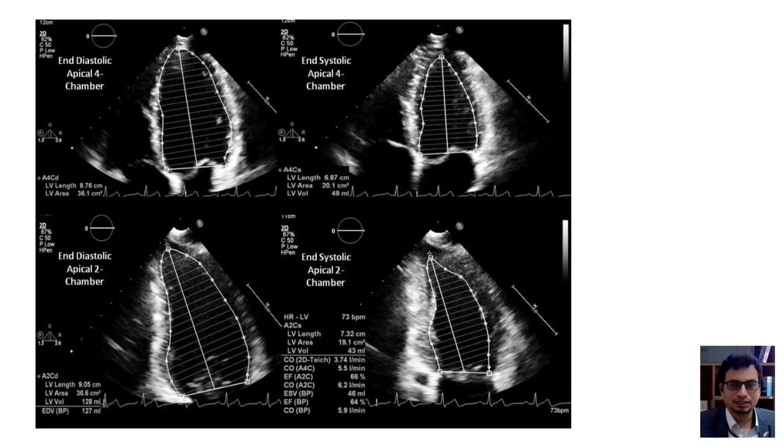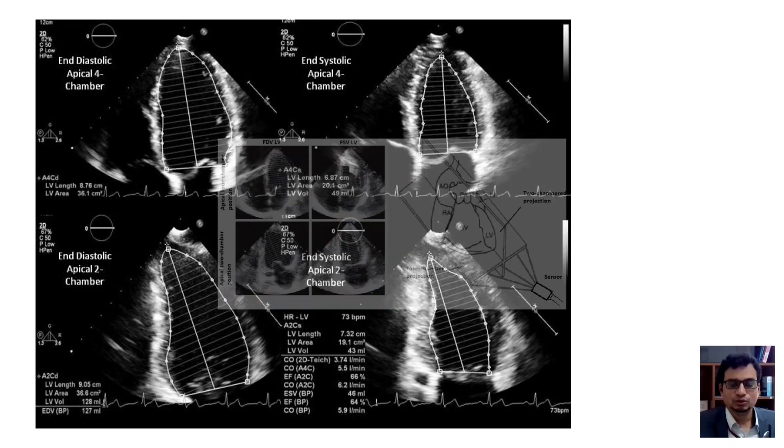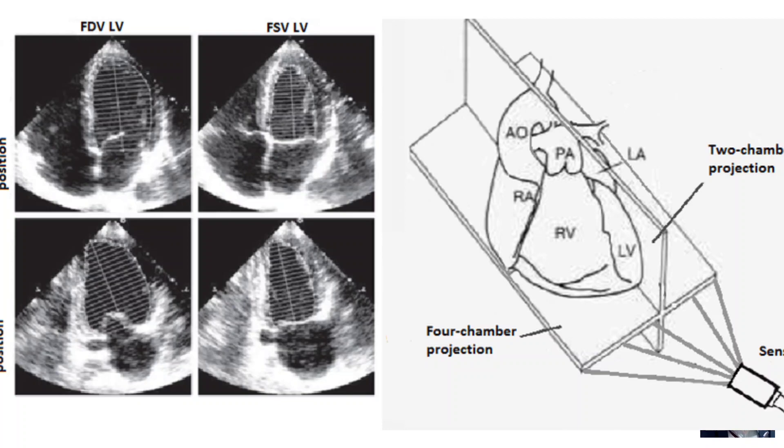In modified Simpson biplane method of discs, first in apical 4 chamber view end systolic and end diastolic areas are calculated by area tracing of LV cavity. In second step apical 2 chamber view is obtained and end systolic and end diastolic areas are calculated by area tracings of LV cavity. These areas are put together in the software integrated in the echocardiographic machine which gives the value of ejection fraction. A total of four measurements are taken in two different views: apical 4 chamber and apical 2 chamber views.